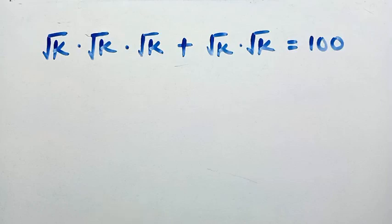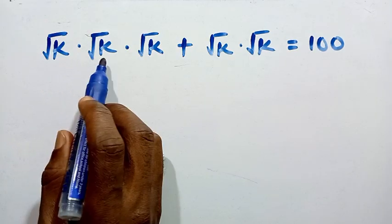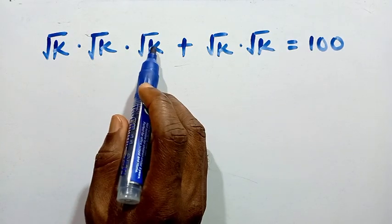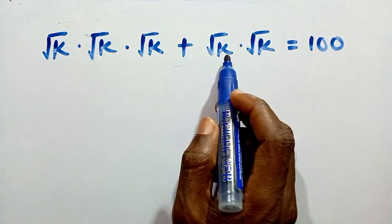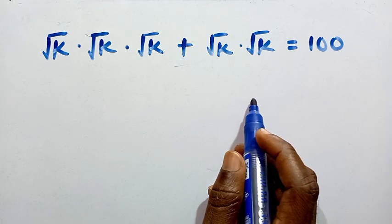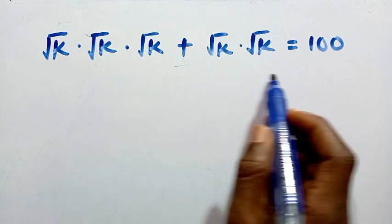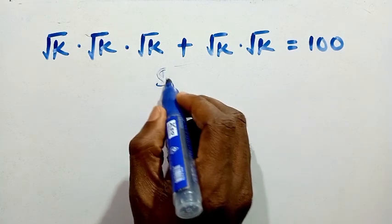Good day viewers, you are welcome. Today we look at how to solve a nice algebraic equation: √k × √k × √k + √k × √k = 100. We want to find the value of k that satisfies this equation. Let's consider the solution from here.